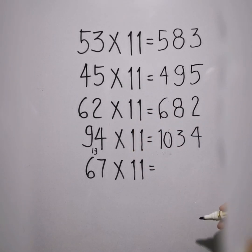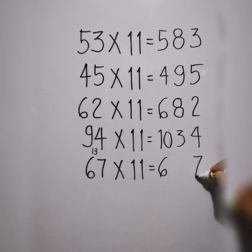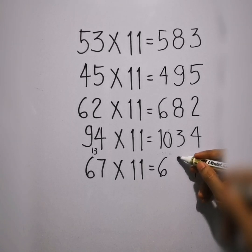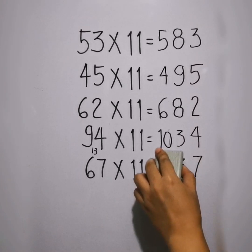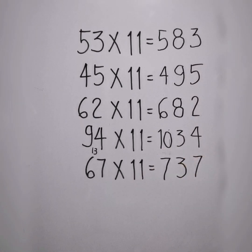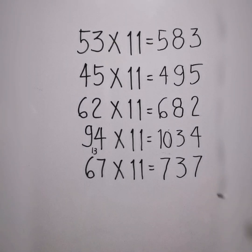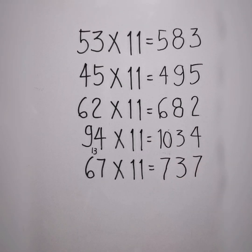Next, we have 67 times 11. We have 6 and 7. 6 plus 7 is 13. So put 3 in the middle and carry the 1. So the answer is 737. So the first step is write the digits, put a space in between, add the digits, put the sum in between. If the result is a two-digit number, carry the first digit to the first number.